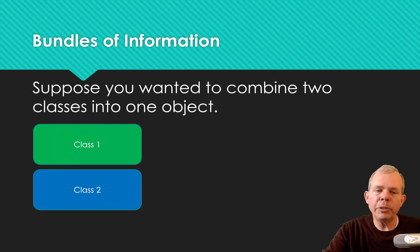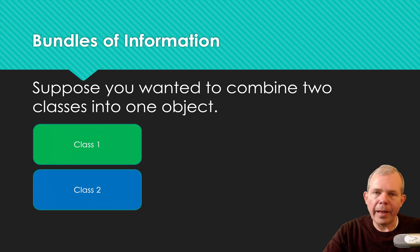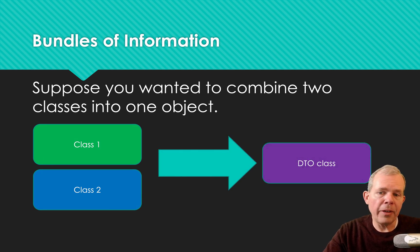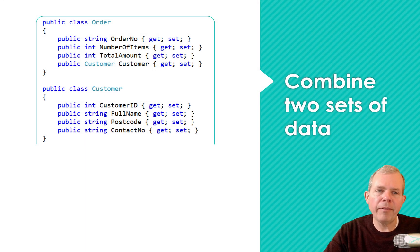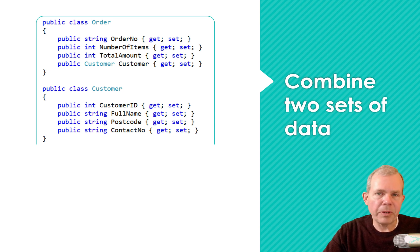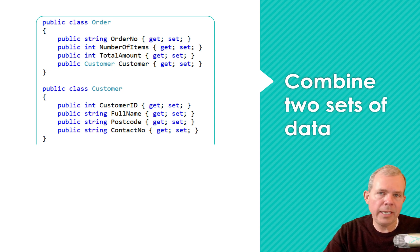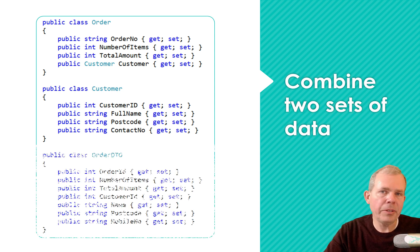Suppose you wanted to combine two different classes and use them in some kind of a data report on the front end. You merge class one and class two into a DTO. For example, if you have a class called Order and another called Customer, the two obviously go together. If you wanted to present this to the front end, you could either pass both objects to a view, or combine them into one DTO and pass that DTO to the front end.